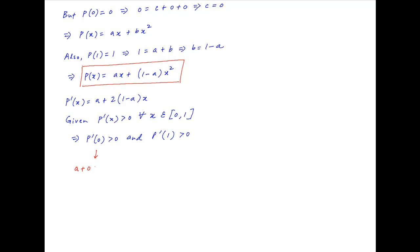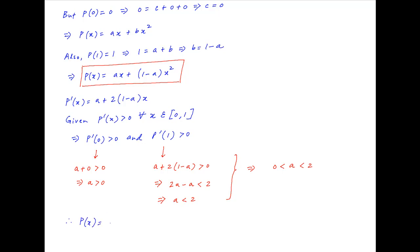The first inequality implies that a is strictly greater than 0. The second inequality implies that a plus 2 times (1 minus a) is strictly greater than 0, which gives 2 minus a greater than 0, or a is strictly less than 2. Therefore p(x) equals ax plus (1 minus a) times x squared for all values of a lying in the open interval 0 to 2. This is the required answer.